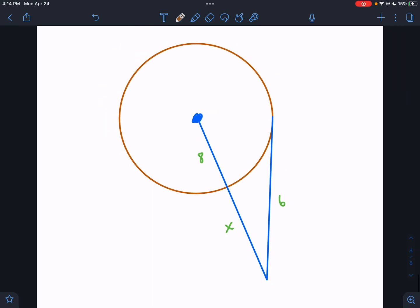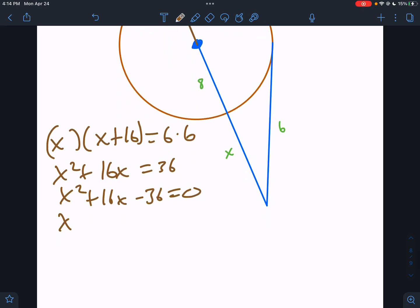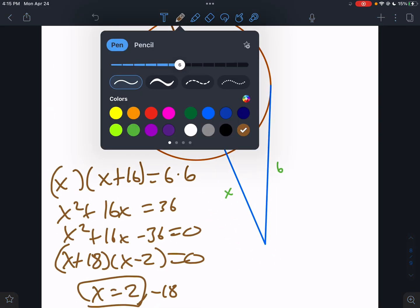One more unique situation here is this doesn't go all the way across. We have to make it go all the way across. And because it's a radius, we know the rest of it would be 8. So just a quick reminder. Hey, you cannot stop in the middle of the circle. You have to go completely across the circle. This would be outside x times total x plus 16 equals outside times total 6 times 6. x squared plus 16x equals 36. So x squared plus 16x minus 36 equals 0. That would be x plus 18x minus 2. So x equals 2 or negative 18. But it has to be 2 because x can't be negative 18 here.